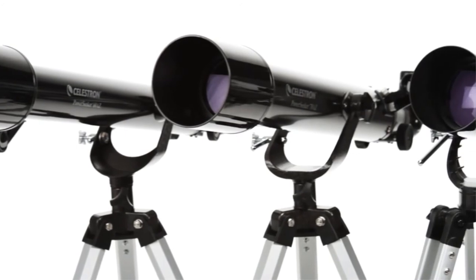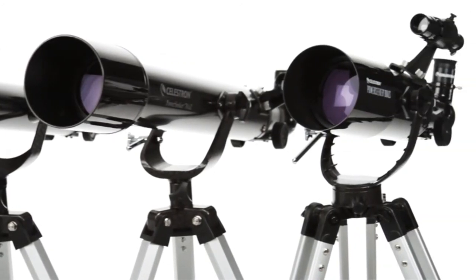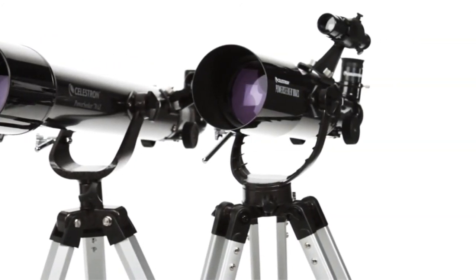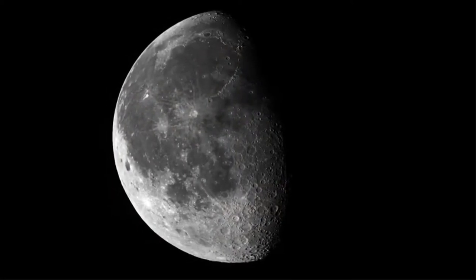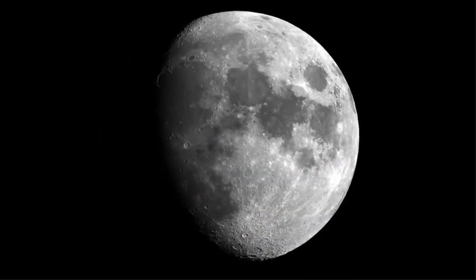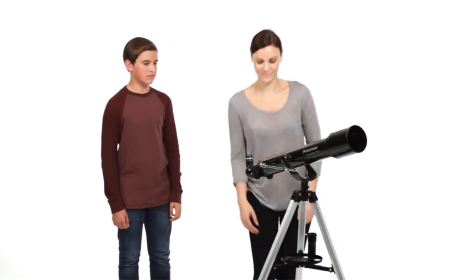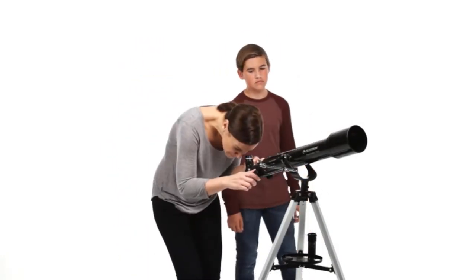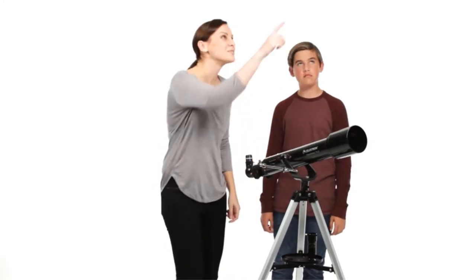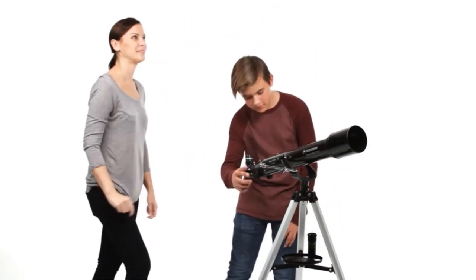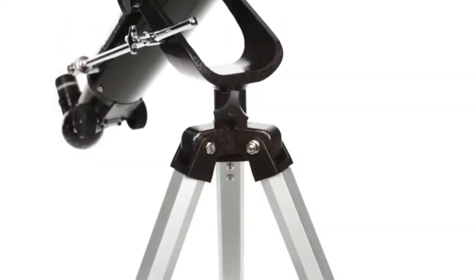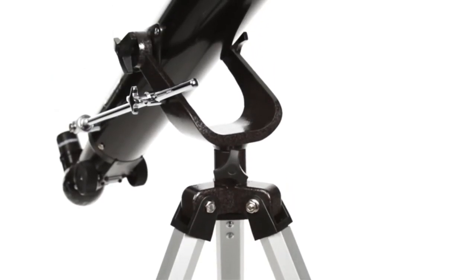The telescope features a manual yoke mount that has a slow-motion altitude rod that offers accurate and smooth pointing. The PowerSeeker 70EQ is lightweight, compact and portable. The telescope is equipped with two eyepieces of 4mm and 20mm and a 3x Barlow lens that triples the power of each eyepiece. The Celestron PowerSeeker 70EQ is an easy to use and powerful telescope.